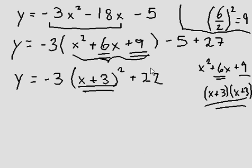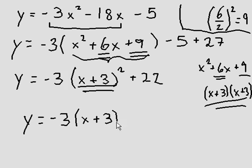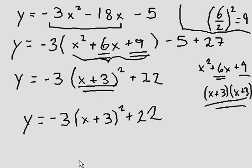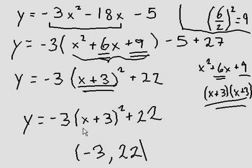Now we have already completed the square for this equation. And if we were to draw the parabola associated with this equation, we would have the vertex as negative 3 comma 22. Negative 3 because we always switch the sign from inside, but we keep the sign from outside.